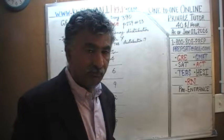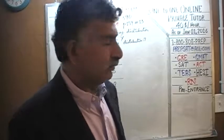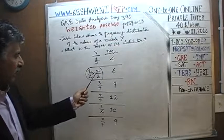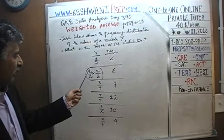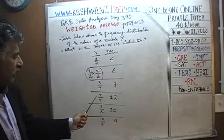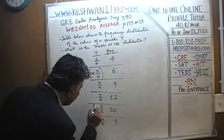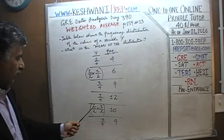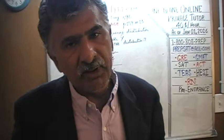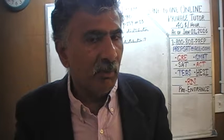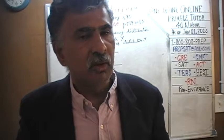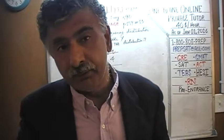Instead of doing it in whole dollars like we did yesterday, we're going to do this problem in terms of quarters. Six people gave two quarters each, because a half is just two quarters. So: six people gave two quarters, nine people gave three quarters, four people gave one quarter, twelve people gave five quarters, ten people gave six quarters, and nine people gave seven quarters. All we have to do is count our quarters, then convert by dividing by four at the very end.